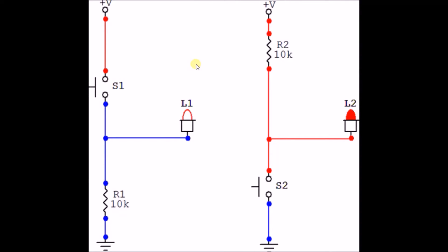In the pull-up configuration, you can see that the resistor is connected to the voltage source and the switch is connected to ground. In the pull-down configuration, the switch is connected to the voltage source and the resistor is connected to ground. When the switch is open, the voltage at the output will be V minus the voltage of the resistor. And when the switch is closed, the current will find the easiest path to flow and it will flow to ground.